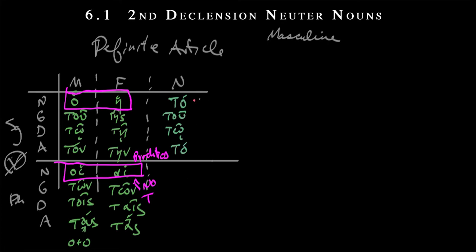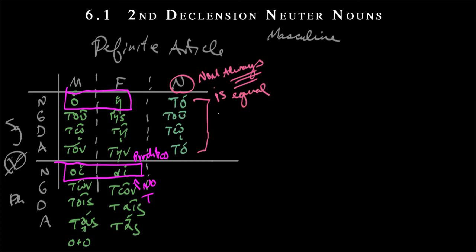And a reminder here that in the neuter, the nominative always — let me triple underline that — is equal, meaning has the same form, to the accusative. Neuter things tend not to be agents quite as often; they tend to be objects, direct objects, what we use the accusative case for. When they do become the subjects of the sentence in the nominative, it was easy enough just to borrow that accusative form. People are often subjects, so we definitely have a special subject form — a definite nominative — that is distinct from the accusative in the masculine and feminine, not so much in the neuter.